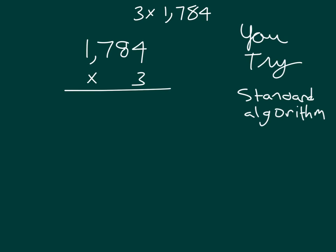3 times 4 is 12. We place a 2 and regroup the 1. 3 times 8 is 24, plus 1 is 25. Place the 5 and regroup the 2. And finally, in the 1000s place, we have 3 times 1, which is 3, plus 2, which is 5.